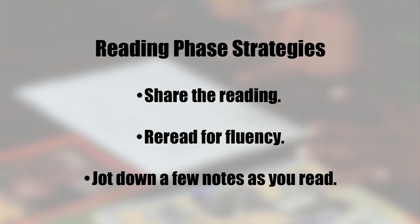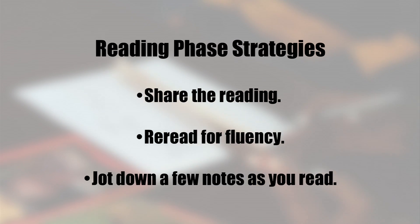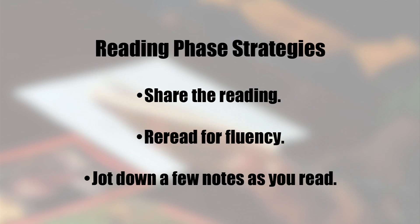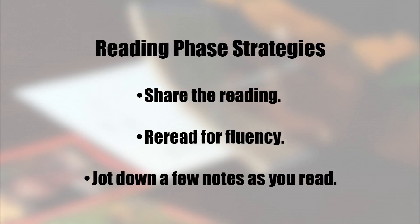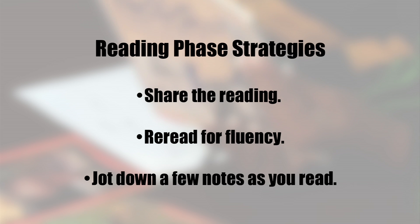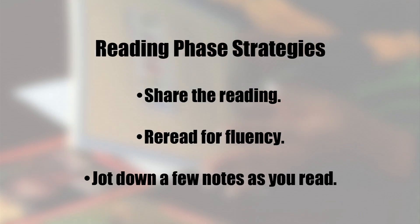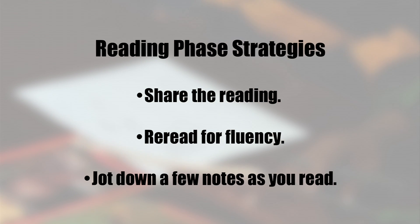Reread for fluency. Many struggling readers lack fluency — their reading is slow and halting and they make mistakes. Rereading is the best way to build fluency. For students who need to work on fluency, have them re-read sentences and paragraphs and re-read books as you work with them over time. Jot down a few notes as you read. Have the learner use sticky notes or something like a double-entry journal as they read. If the learner struggles with writing, the tutor can do the writing, but the learner needs to do the thinking.